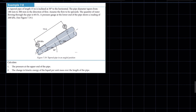A tapered pipe of length 15 meters is inclined at 30 degrees to the horizontal. The pipe diameter tapers from 180 to 300 millimeters in the direction of flow. Assume the flow to be upwards. The quantity of water flowing through the pipe is 60 liters per second. The pressure gauge at the lower end of the pipe shows a reading of 200 kilopascals.